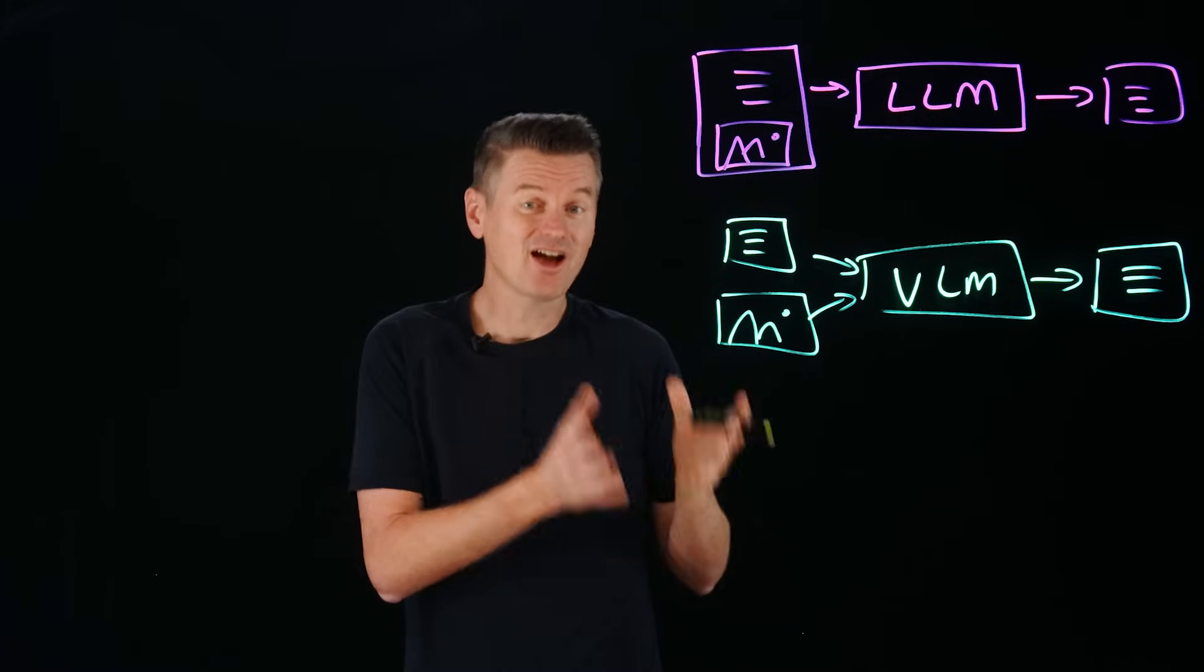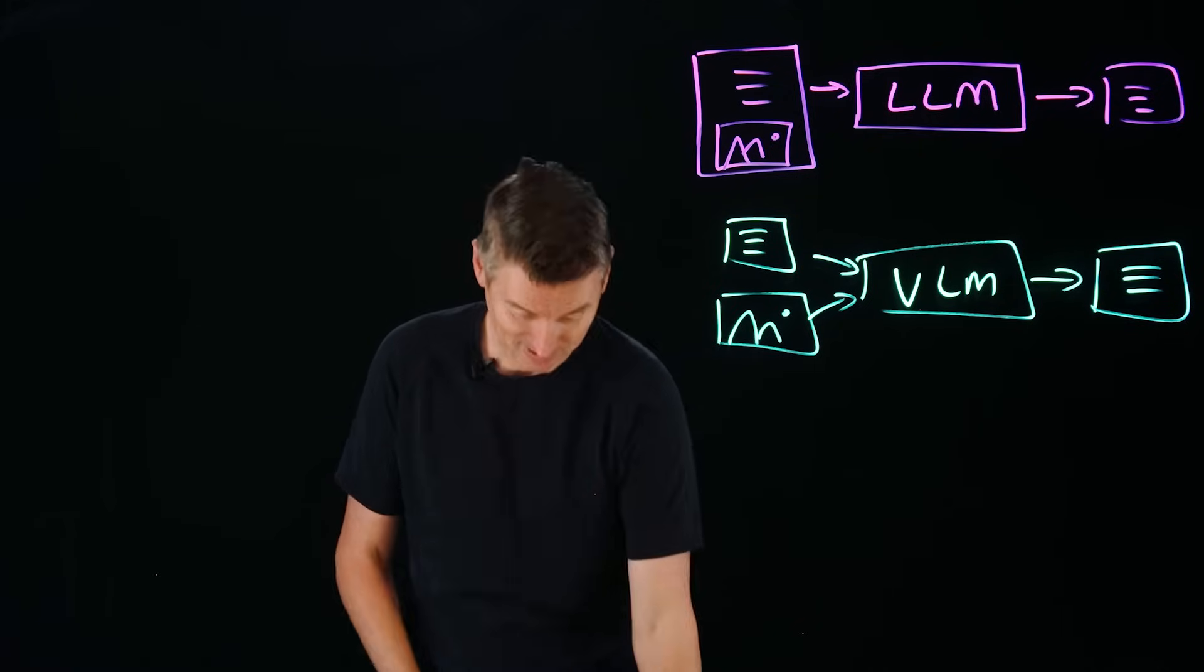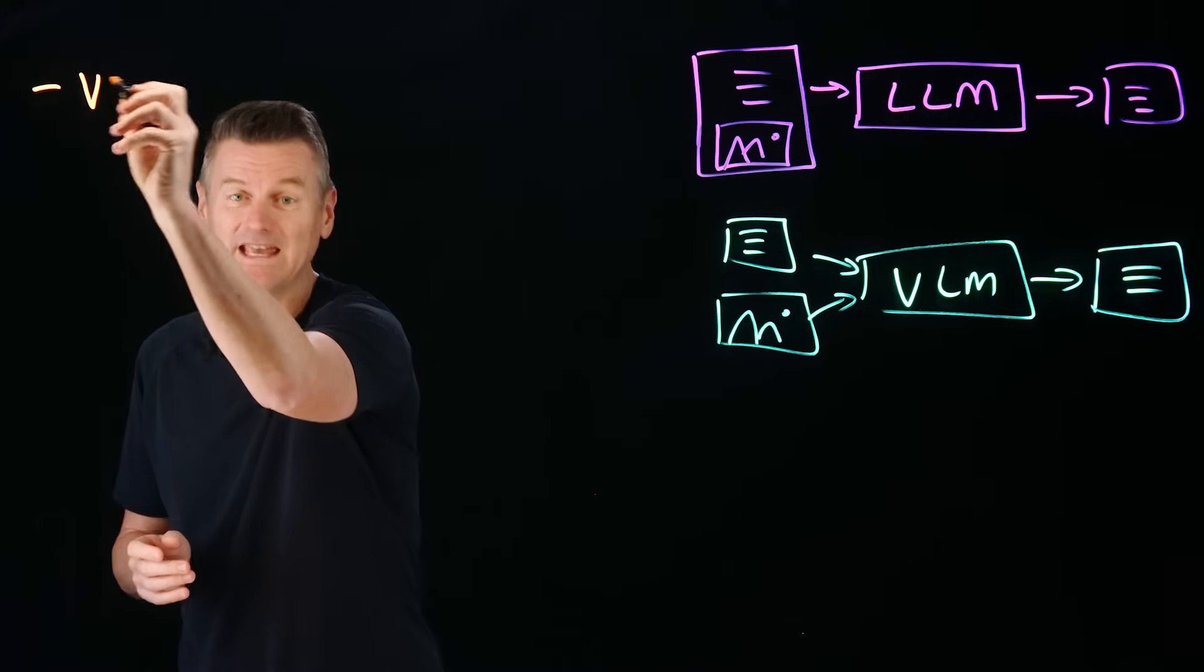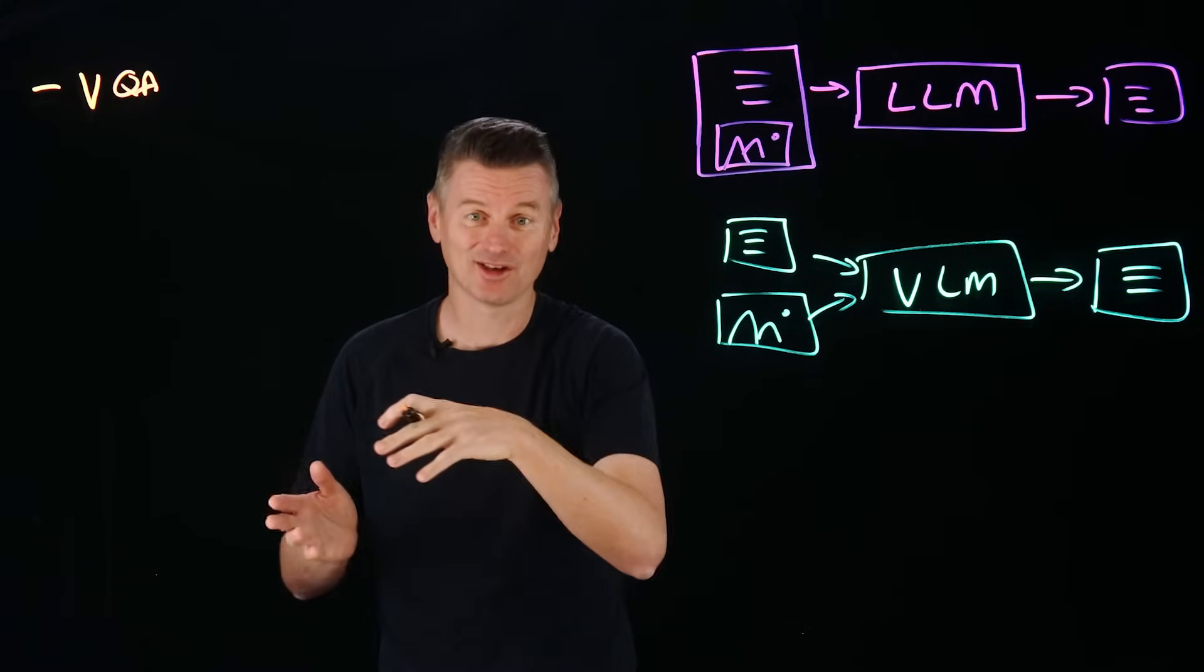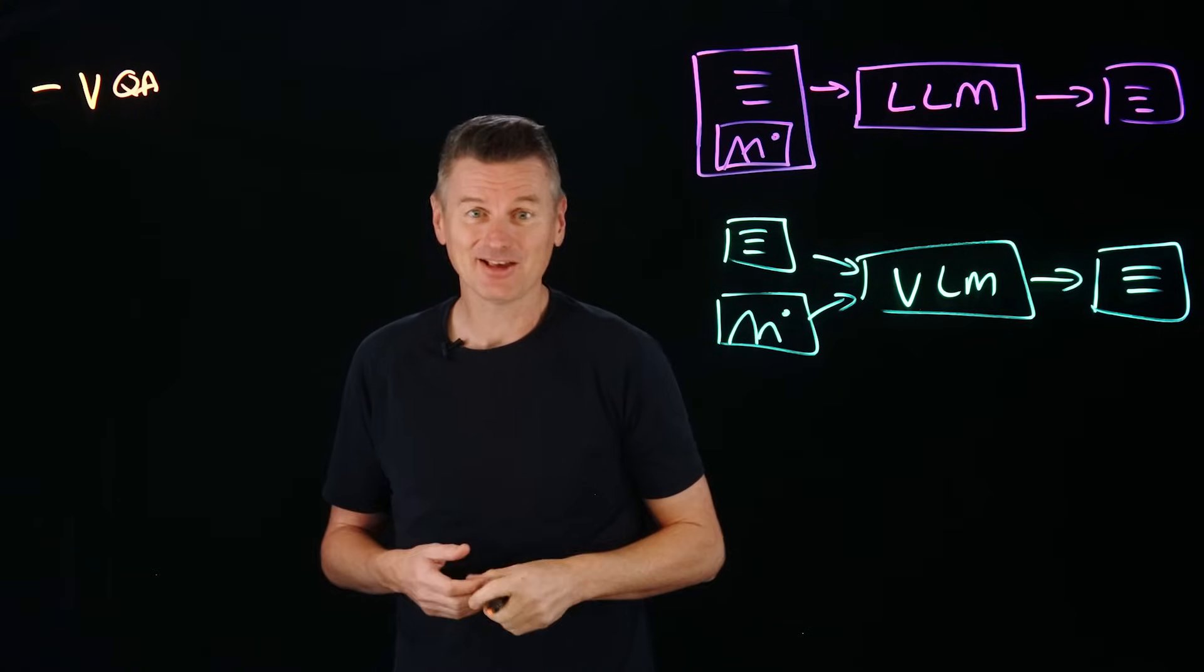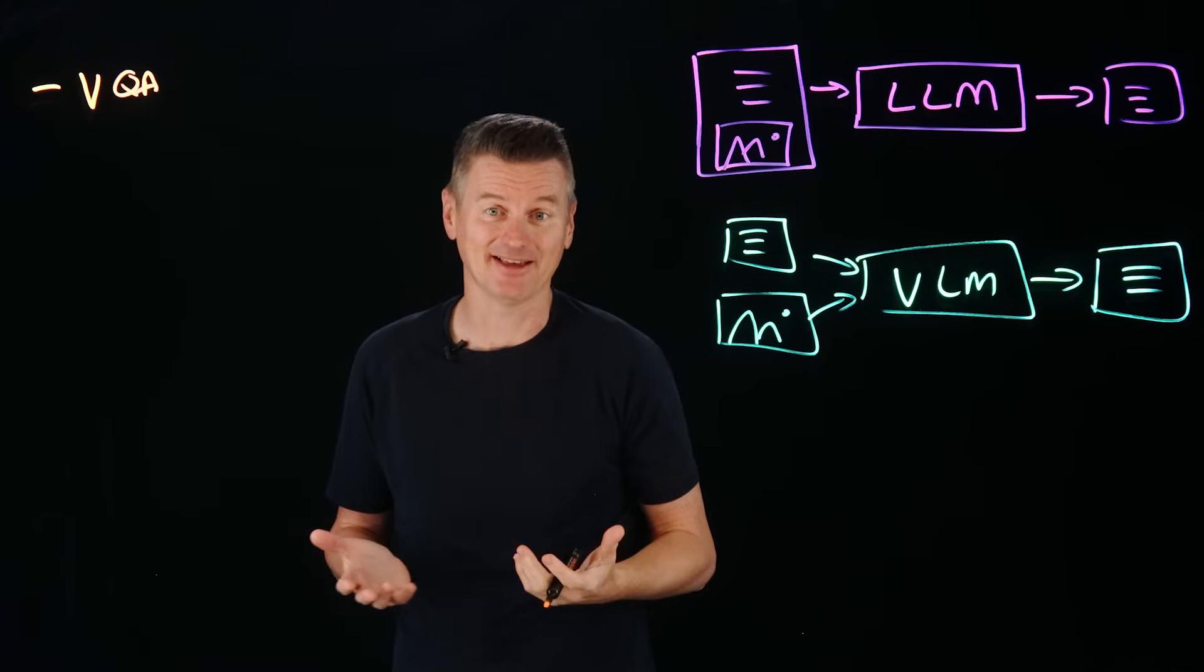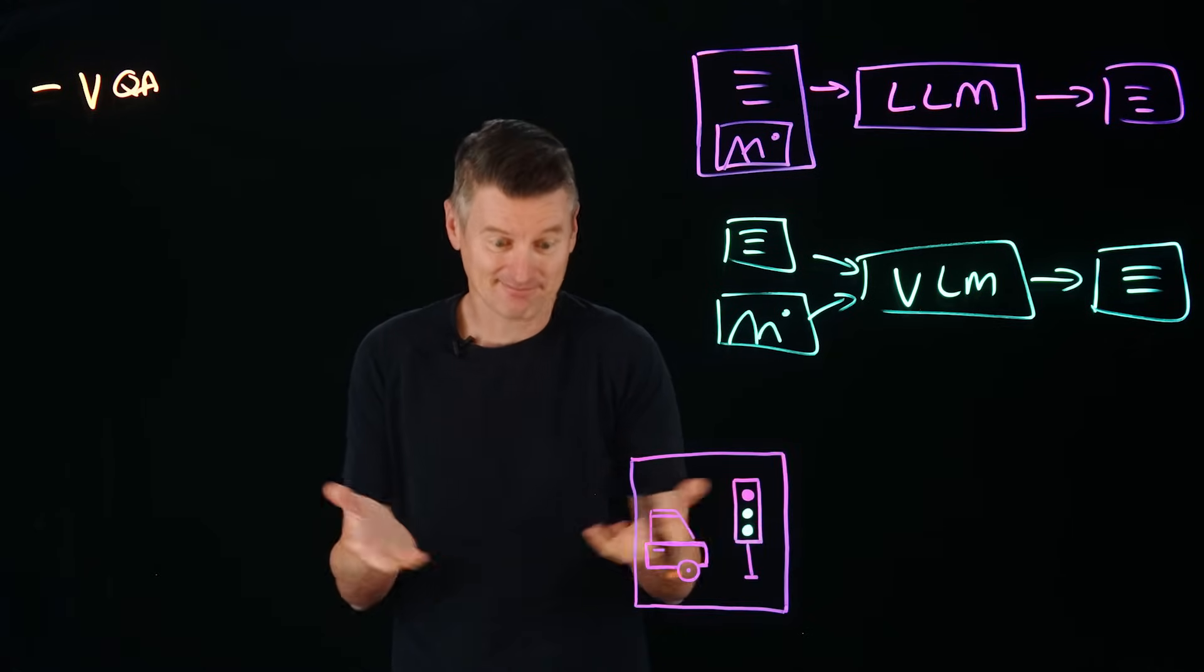So what sort of tasks can we perform with a VLM? Well, one of those tasks is called VQA or visual question answering. That's just kind of a fancy way to say that you can show a VLM a picture and have it analyze it.